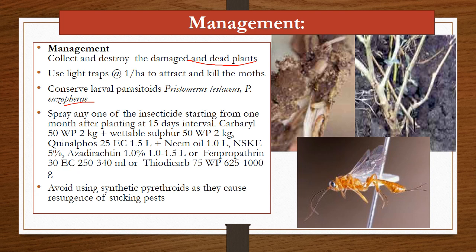Spray insecticides from one month after planting at 15-day intervals, such as carbaryl 50 WP at 2 kg, plus wettable sulfur 50 WP at 2 kg, and also quinalphos, neem oil, neem seed kernel extract, abamectin 1%, phenpropathrin 30 EC at 250 ml, thiodicarb 75 WP at 625 to 1000 grams per acre. Avoid using synthetic pyrethroids as they cause resurgence of sucking pests.